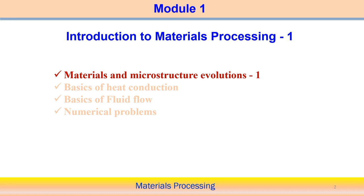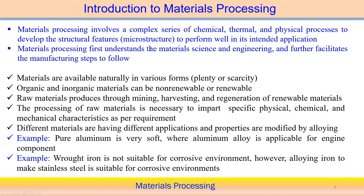Module 1 consists of four different parts. The first is materials and microstructure evolution, because it is an introduction level. Then we will try to understand the basics of heat conduction. After that we will understand the basics of fluid flow, and we will try to focus on a few numerical problems or case studies associated with this material processing subject. Now we will start with the first part — materials and microstructure evolution.